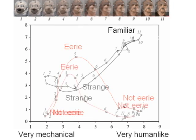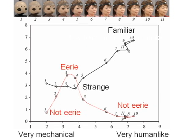In this example, we're going from Elevie, which is based on Wakamaru, to android Repliee Q1 Expo, to the model for Repliee Q1 Expo. And we also find a similar uncanny valley.